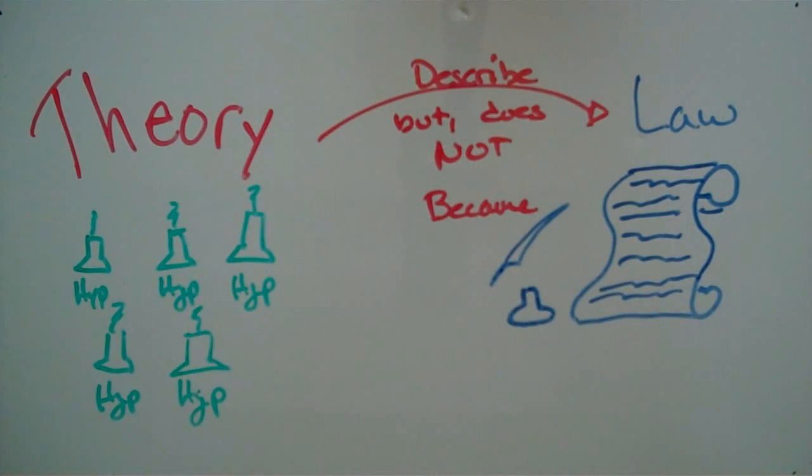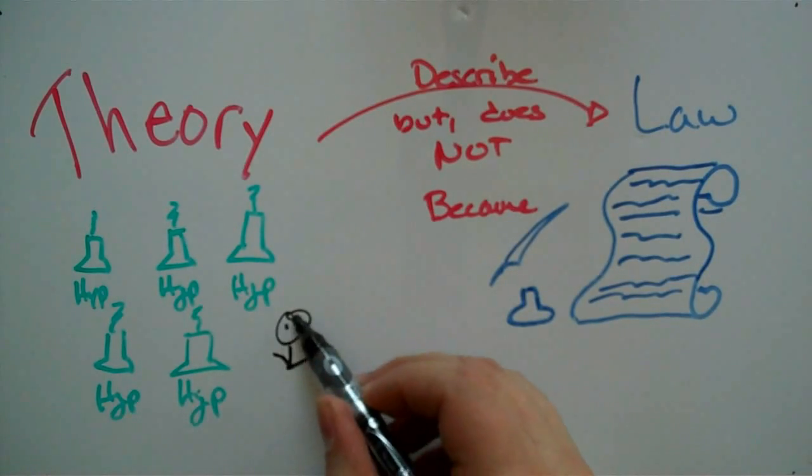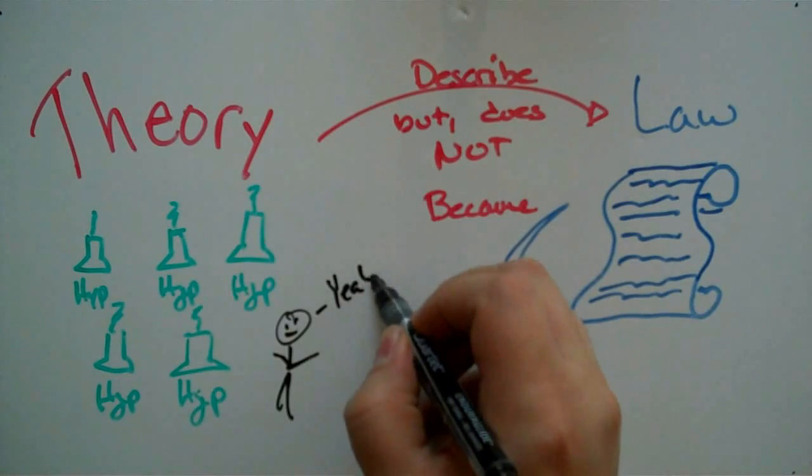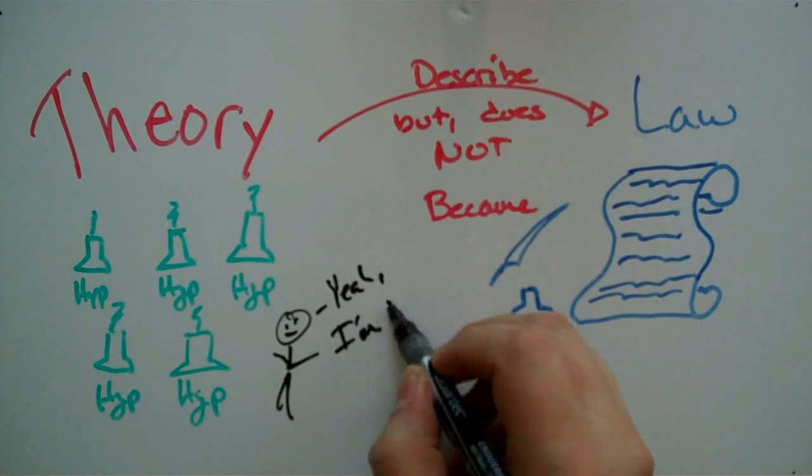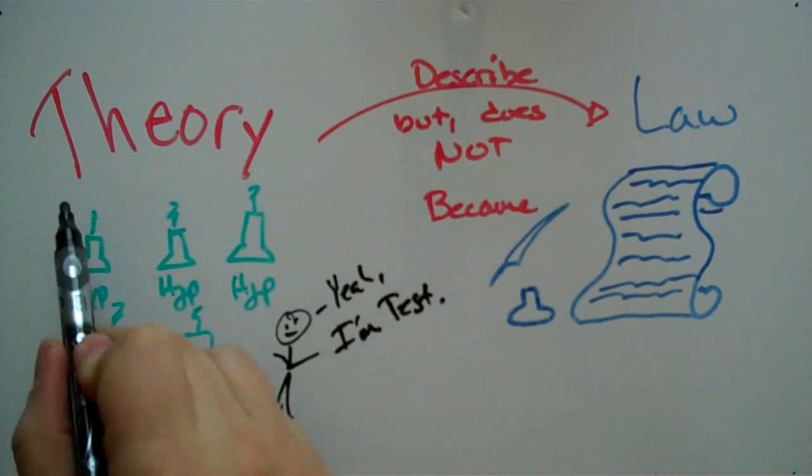So the majority of science is coming up with a hypothesis that is testable. If you prove it right, you give it to other people. And those other people, they test the hypothesis. And if they test it, and then more and more people test it, it can become a theory.